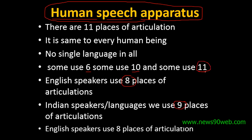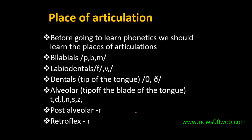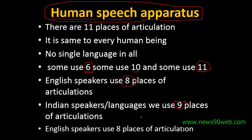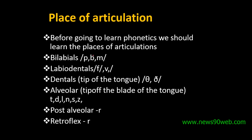Because there are differences between languages — some have consonants that others don't. English doesn't have certain consonants, so they are not used. English speakers use 8 sounds. In India, we use 9 places of articulation. So before going to learn phonetics, we should learn the place of articulation.